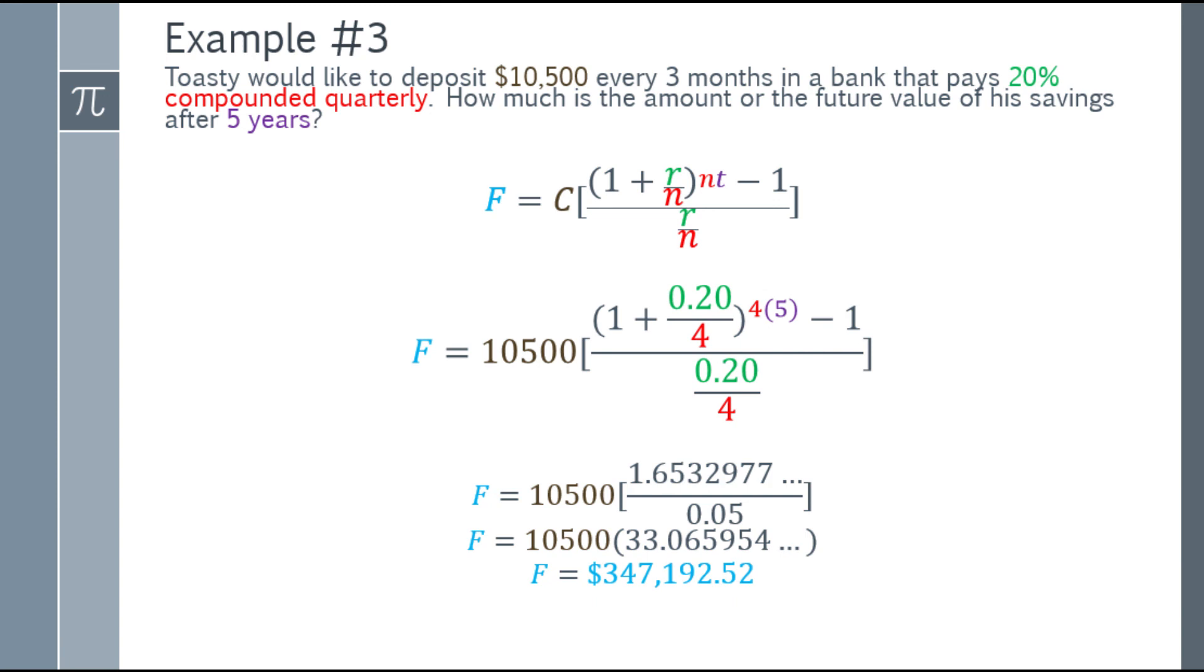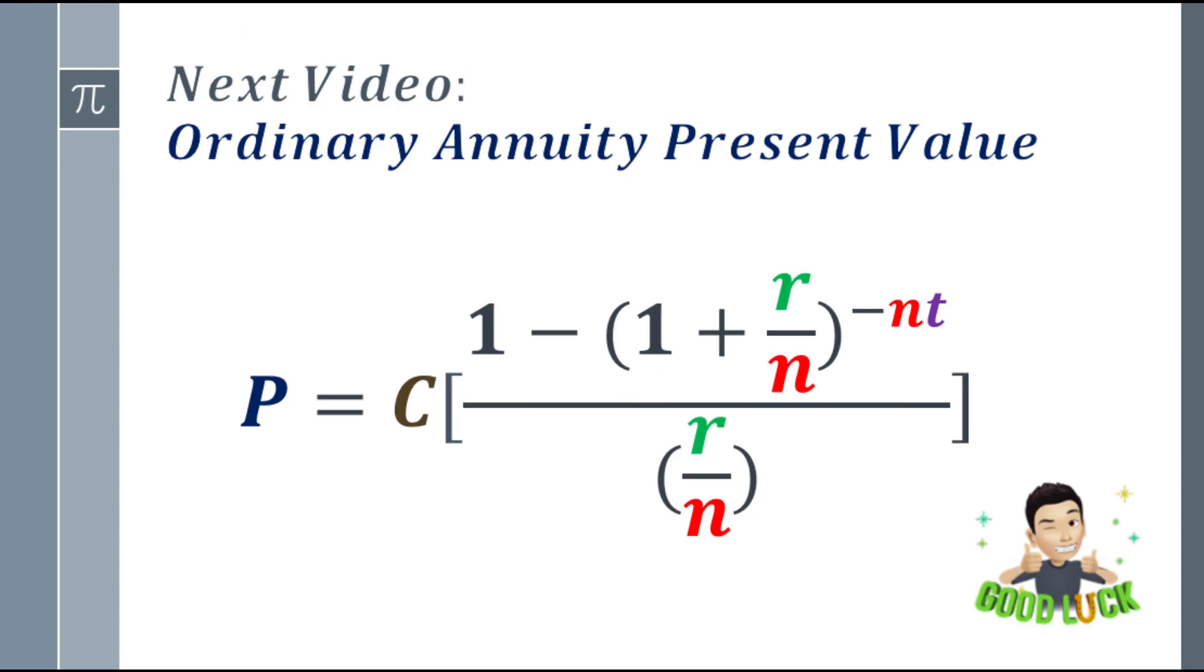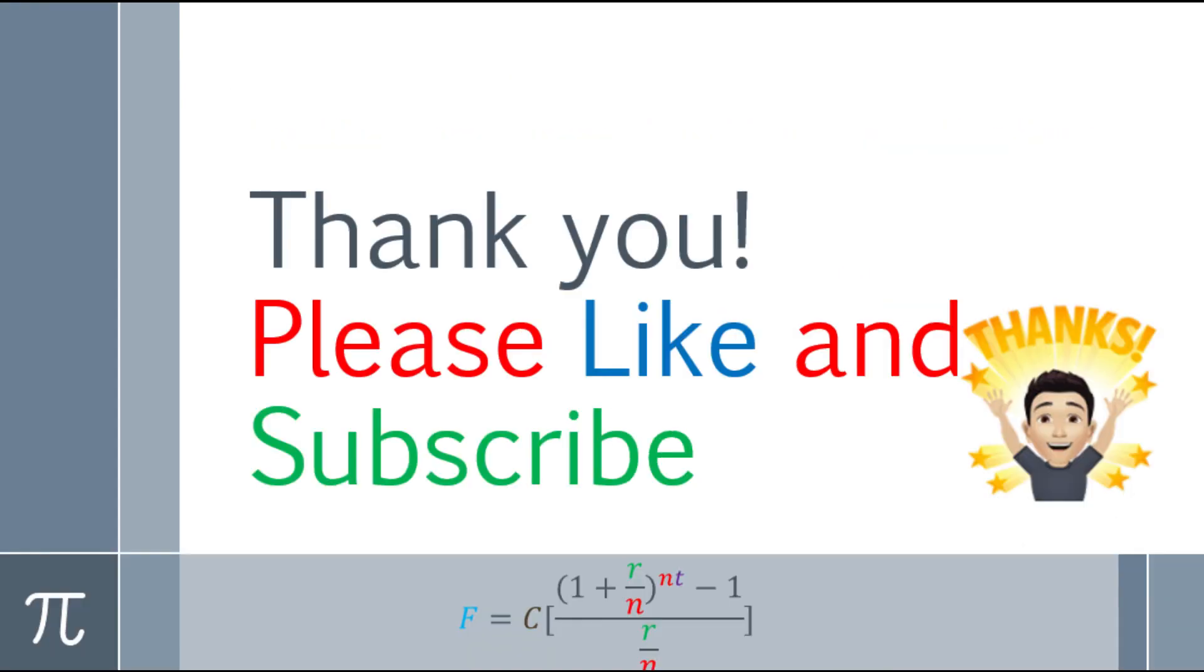So if Toasty deposits 10,500 every 3 months in a bank that pays 20% compounded quarterly, after 5 years he gets $347,192.52. That's the end of the lesson about ordinary annuity future value. The next video will be ordinary annuity present value, with the formula P = C times [1 - (1 + r/n)^(-nt)] / (r/n). If you'd like to comment or suggest another math video or if you have assignments, please comment below. This is James, your math and language instructor. Please like and subscribe. Thank you. Bye-bye.